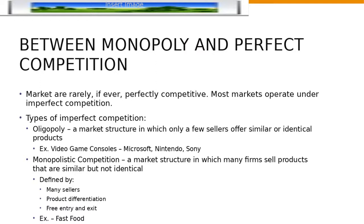However, markets, if ever, are rarely perfectly competitive. Most markets operate under imperfect conditions, and there's two types of imperfect conditions. The first is oligopoly, which we'll get to in chapter 17, and this is a market structure in which only a few sellers offer similar or identical products.